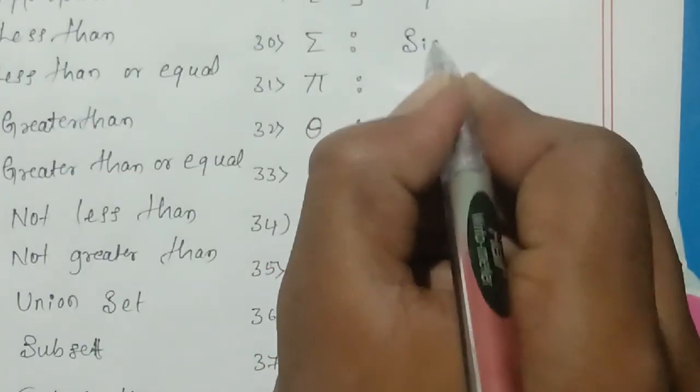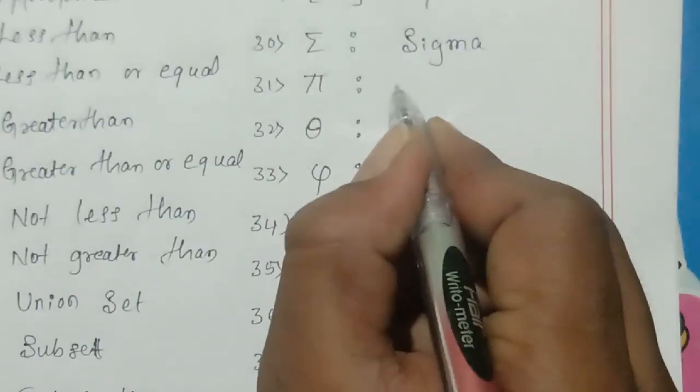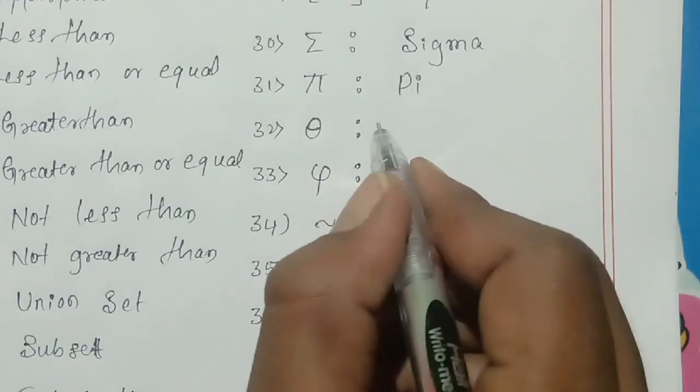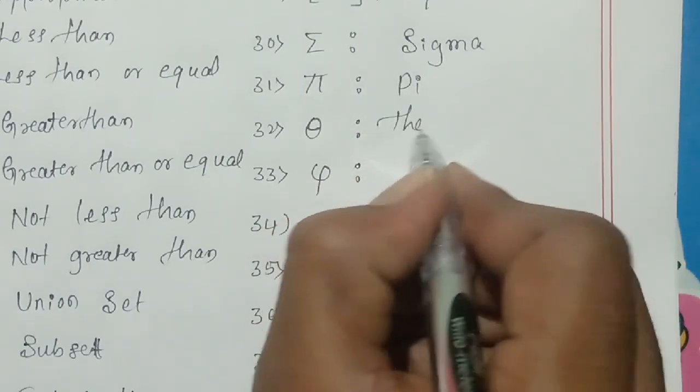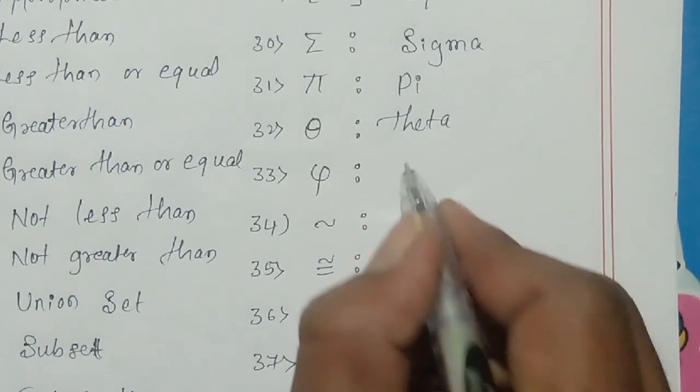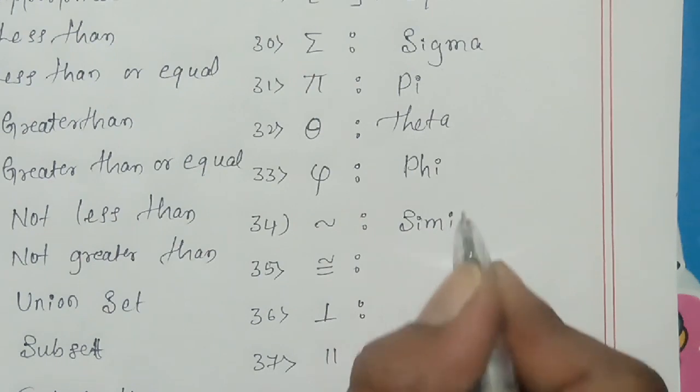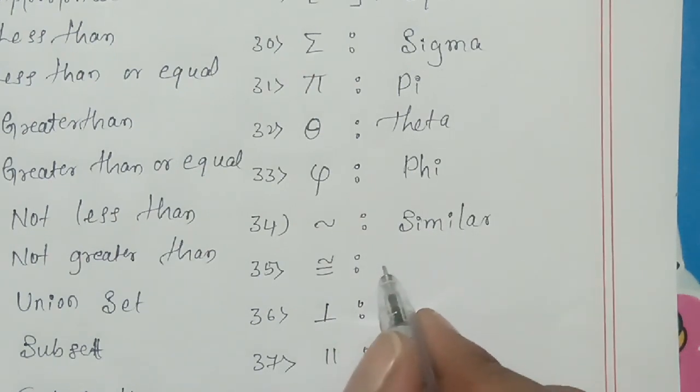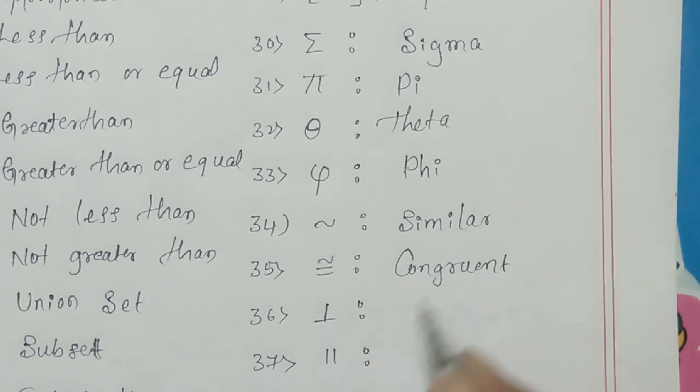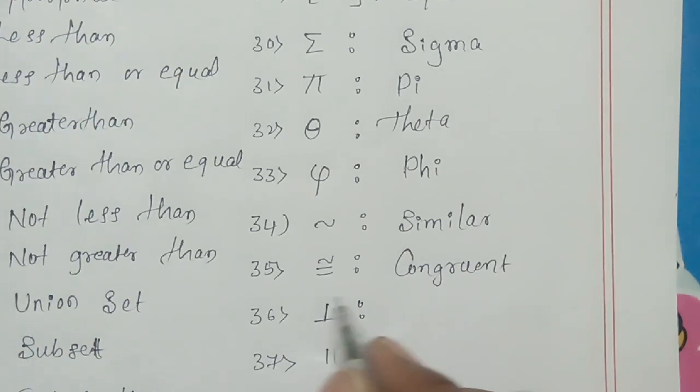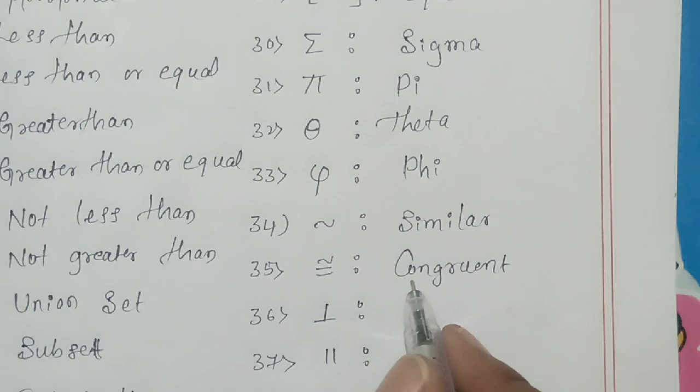This is sigma. This is pi. This is theta. This is also phi. This is similar. This is congruent. Congruent means two figures are same in size and same in shape. Similar means two figures are same in shape but different in size.